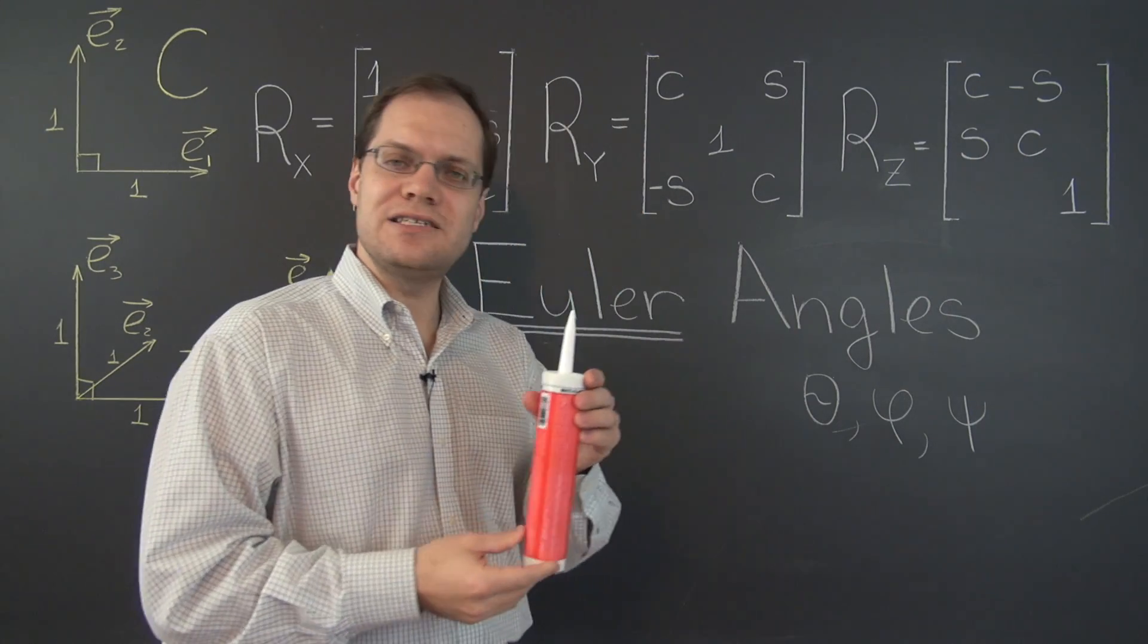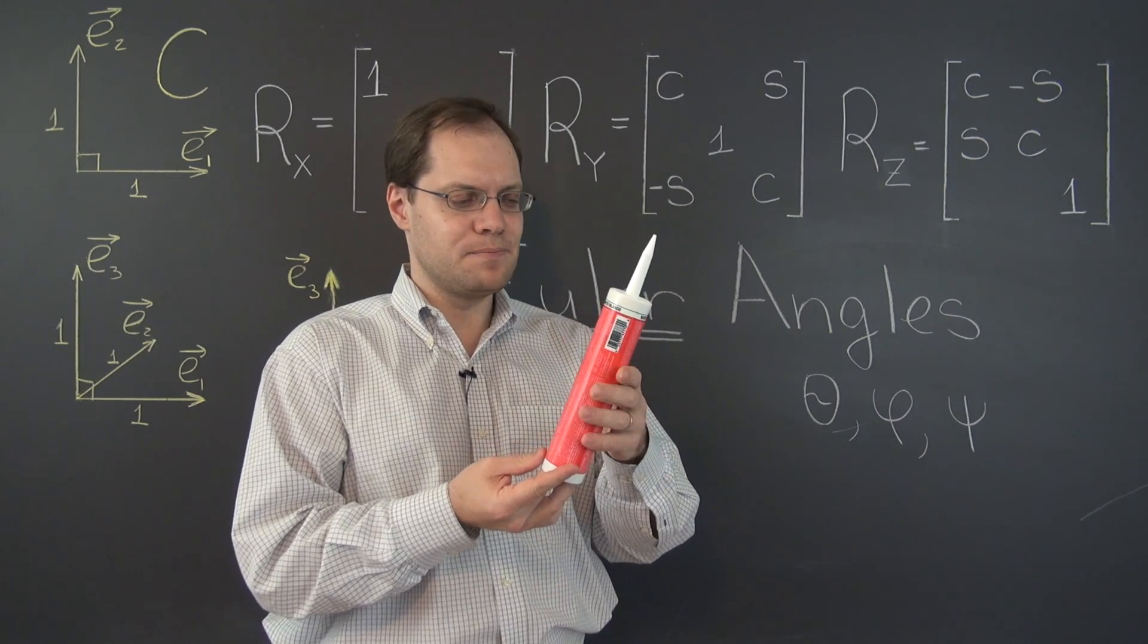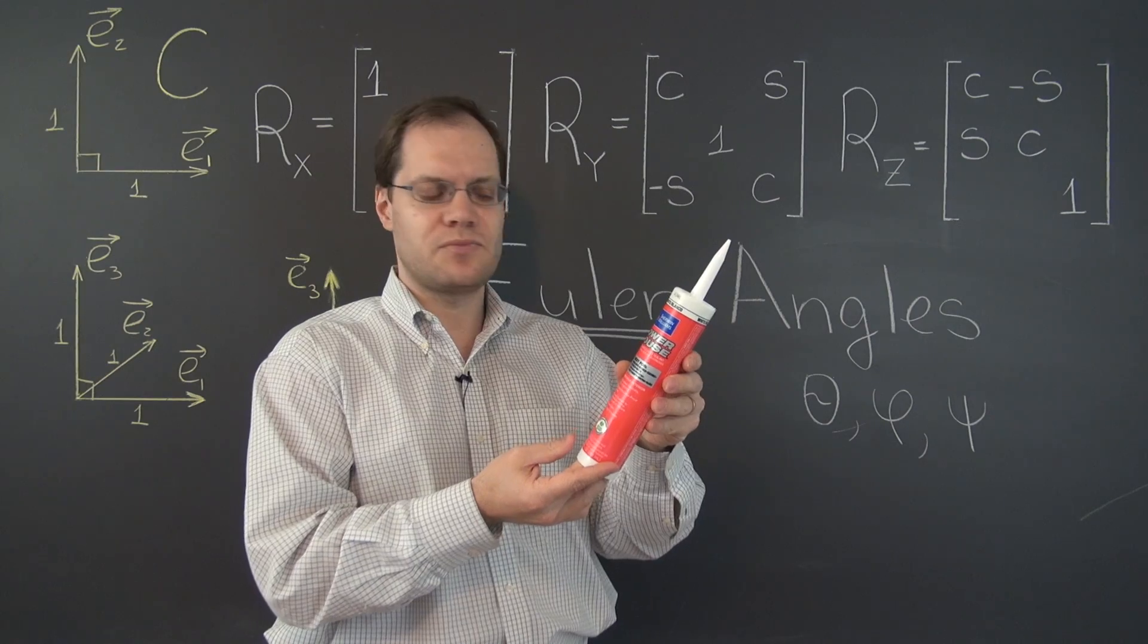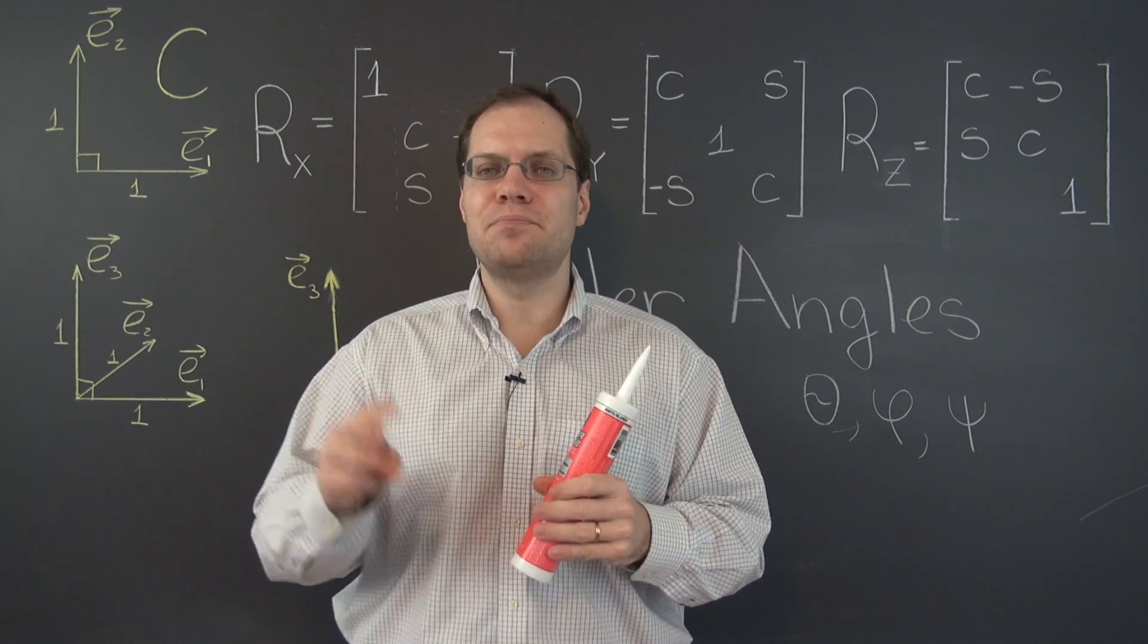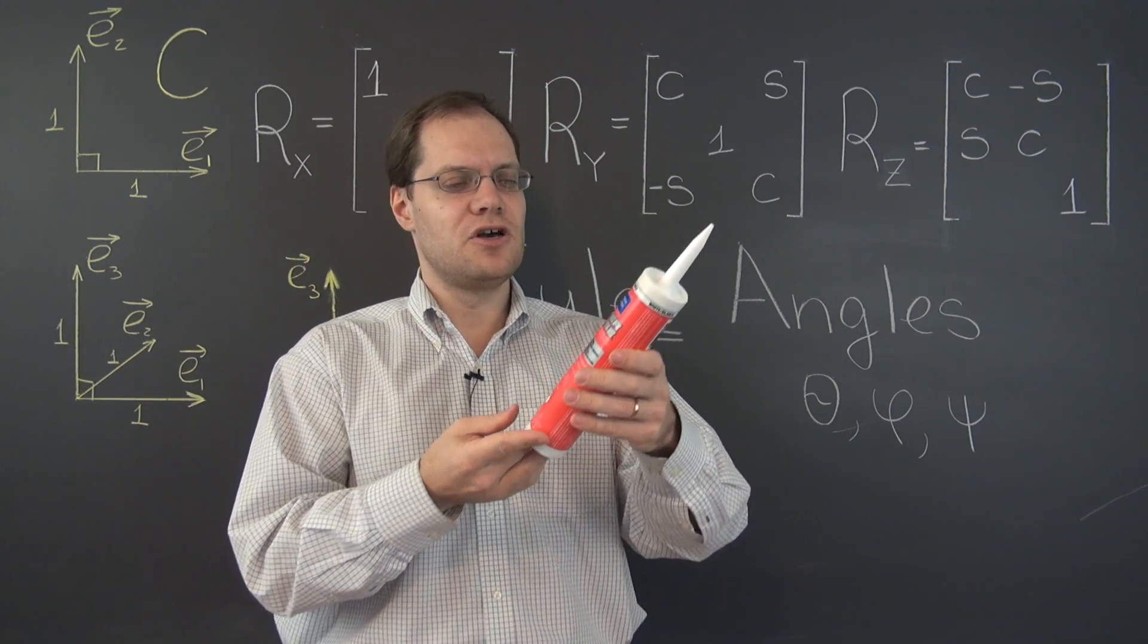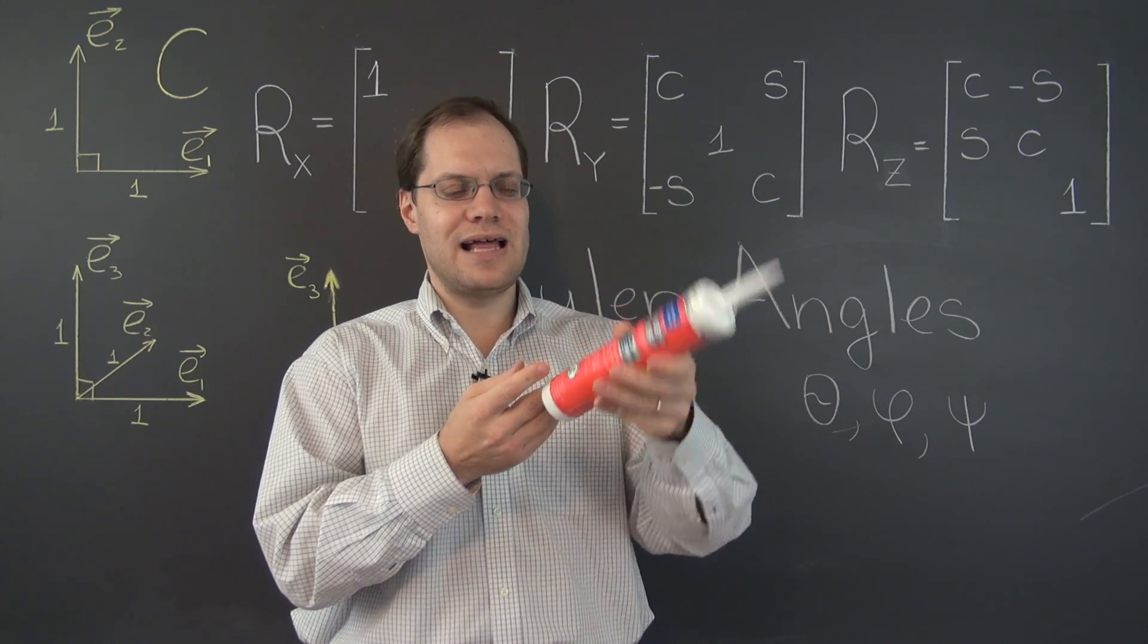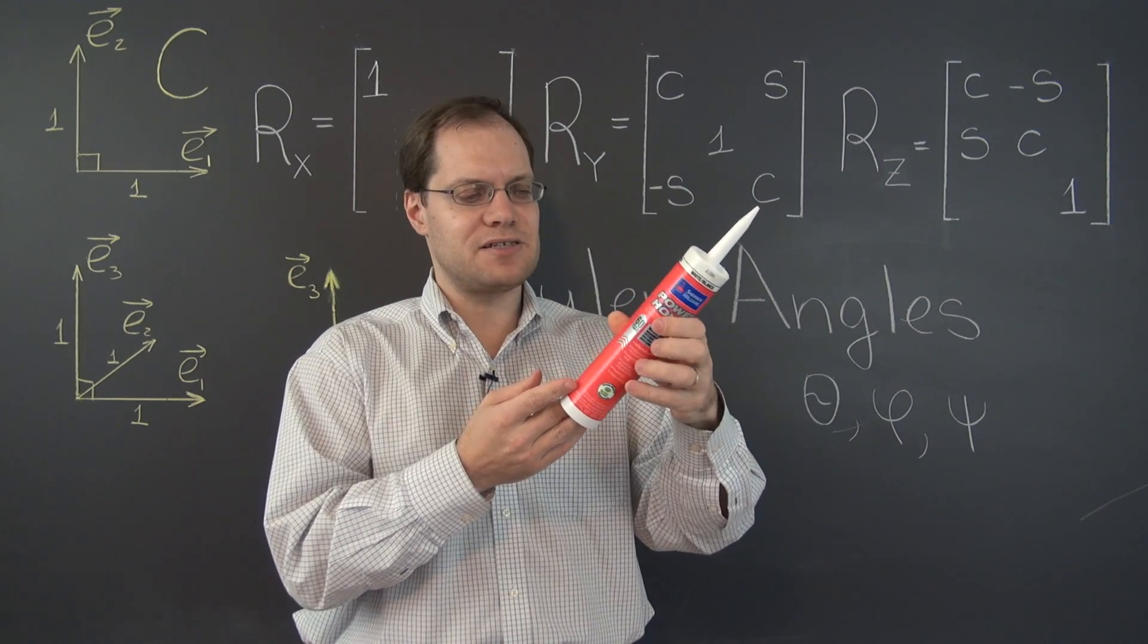Now, as we have already discussed, an arbitrary orientation of a rigid body can be described by specifying the direction in which it points plus the amount of twist. And that's why you need precisely three parameters, because it takes two parameters to specify the direction in which the body points, perhaps the latitude and the longitude, and the additional parameter specifies the twist.